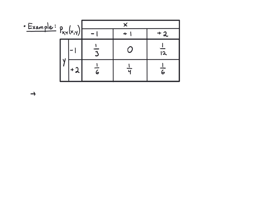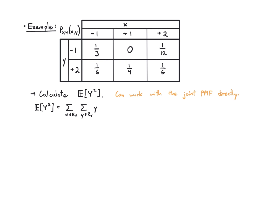Let's work through some examples. From a given joint PMF table, I want to calculate E[y²]. Notice this doesn't involve x — that's fine, it's still a function of x and y that just happens to depend only on y. Instead of computing the marginal of y first, I can work with the joint PMF directly. To get E[y²], I sum over x and over y: y² times the joint PMF.